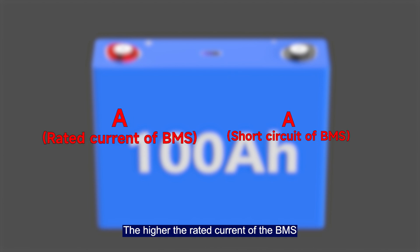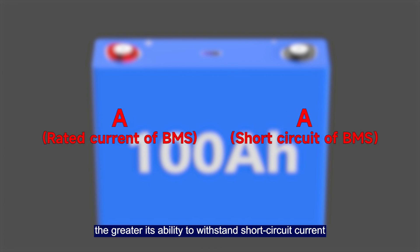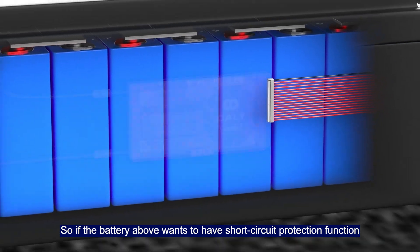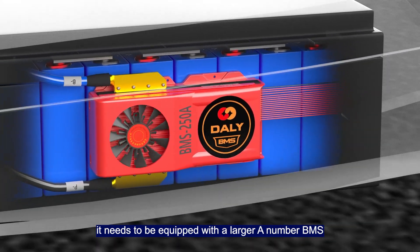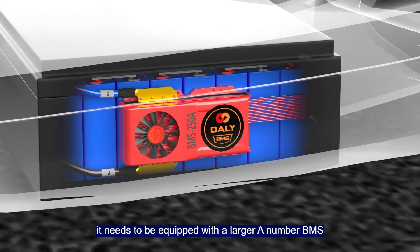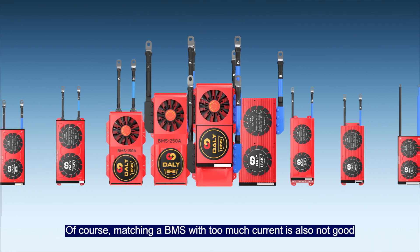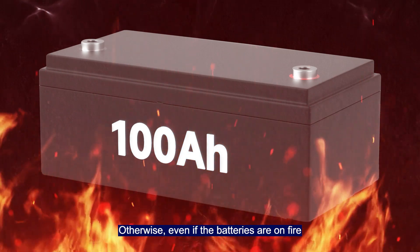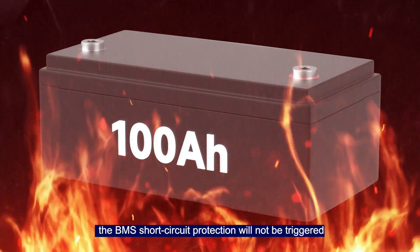The higher the rated current of a BMS, the greater its ability to withstand short circuit current. So if the battery pack wants to have short circuit protection function, it needs to be equipped with a larger ampere number BMS. Of course, matching BMS with too much current is also not good. Otherwise, even if the batteries are on fire, the BMS short circuit protection will not be triggered.